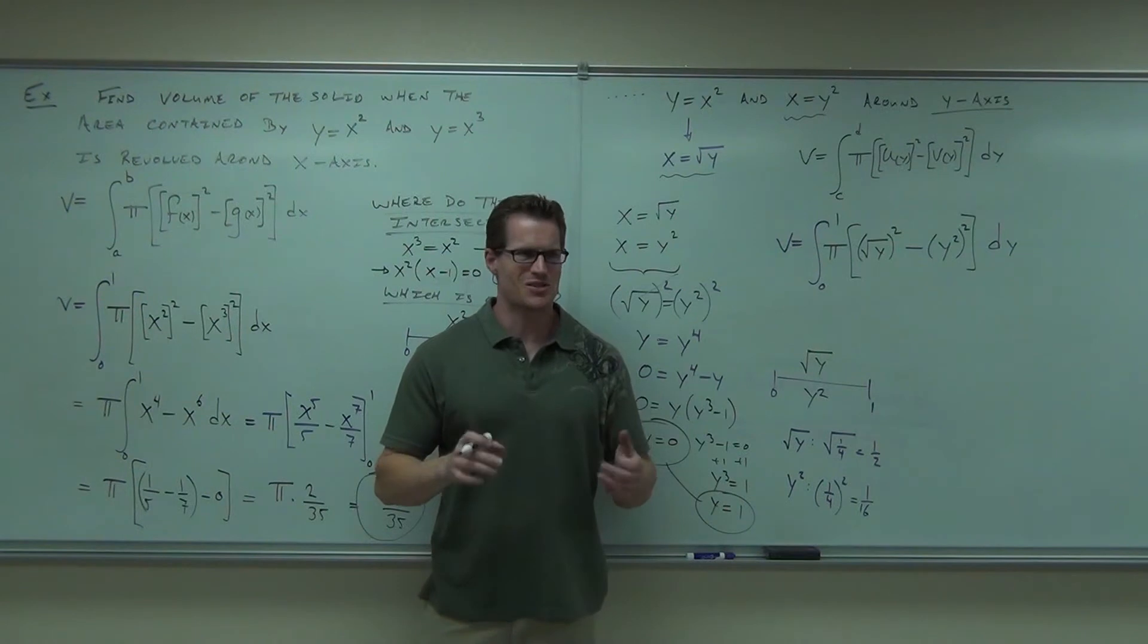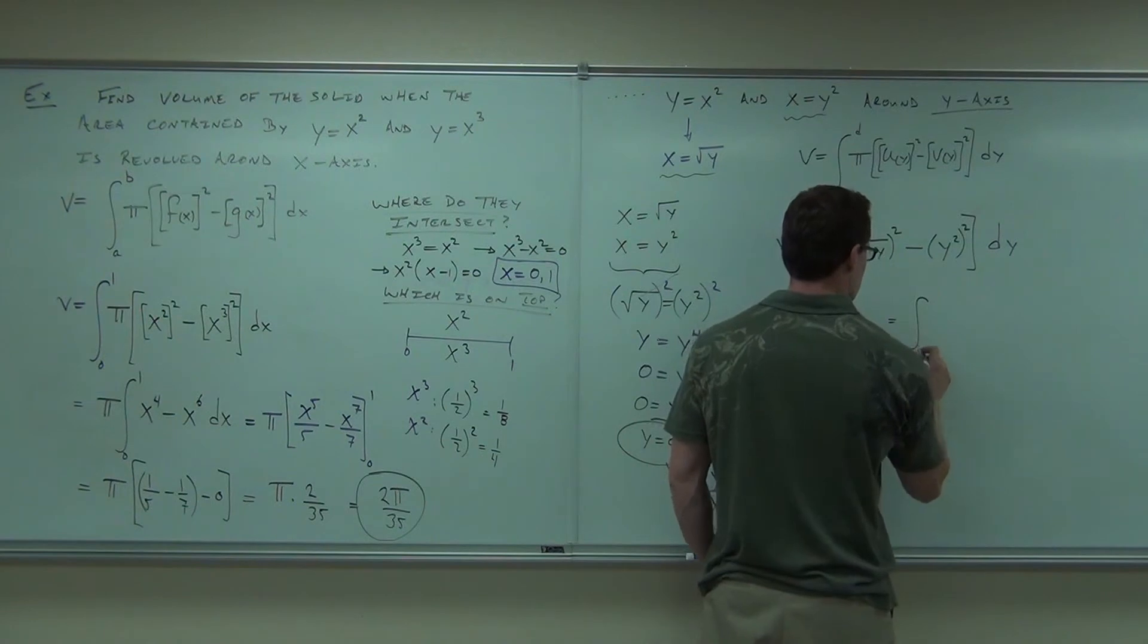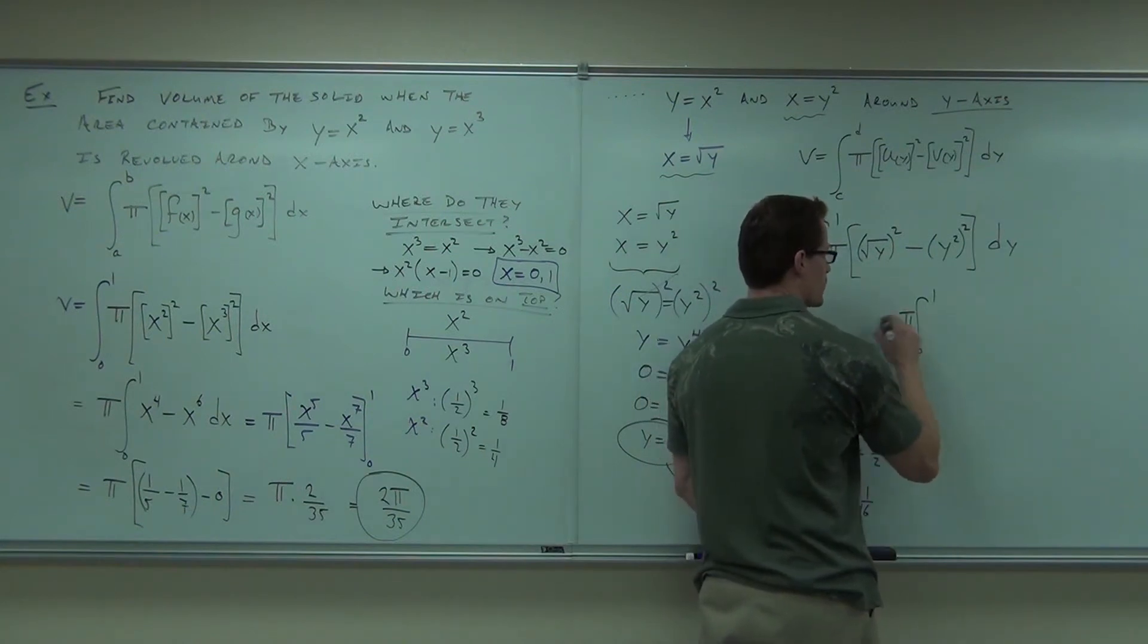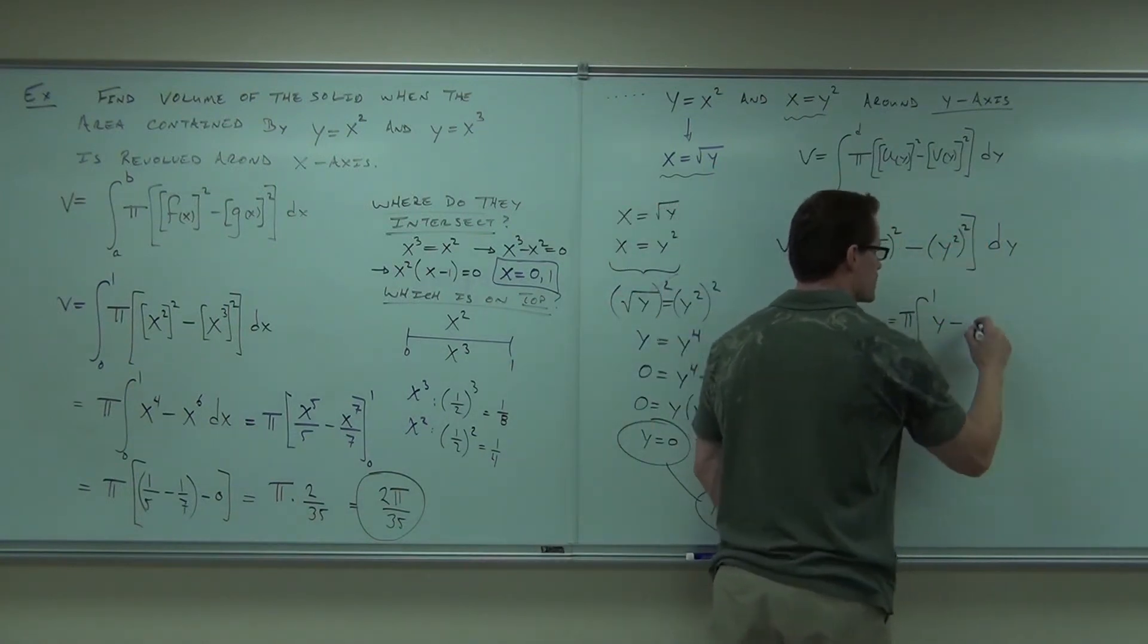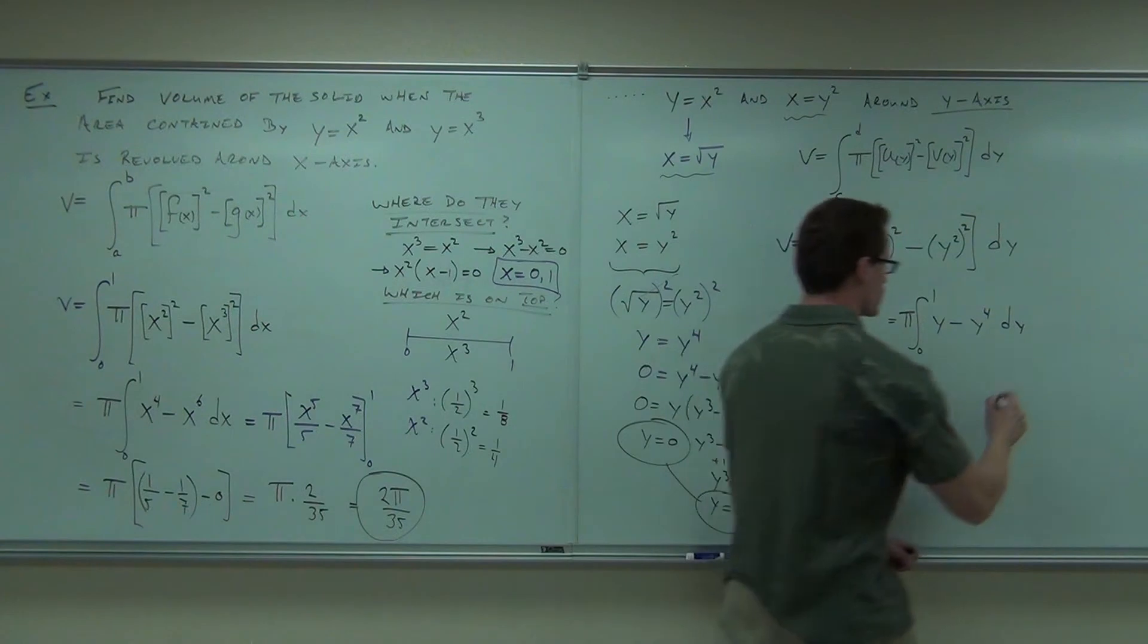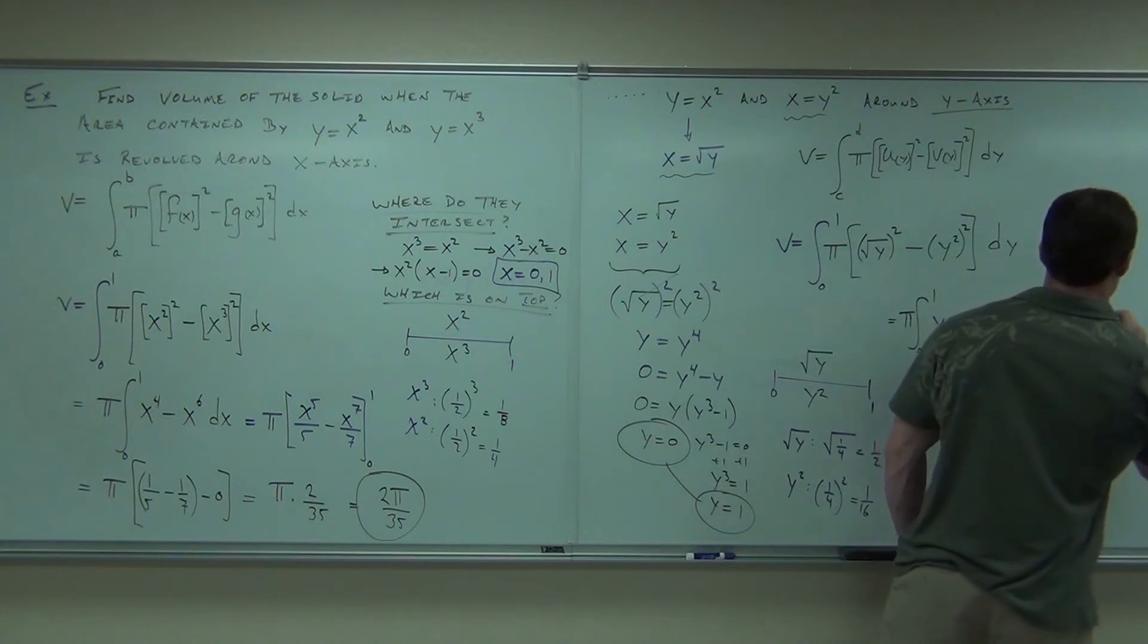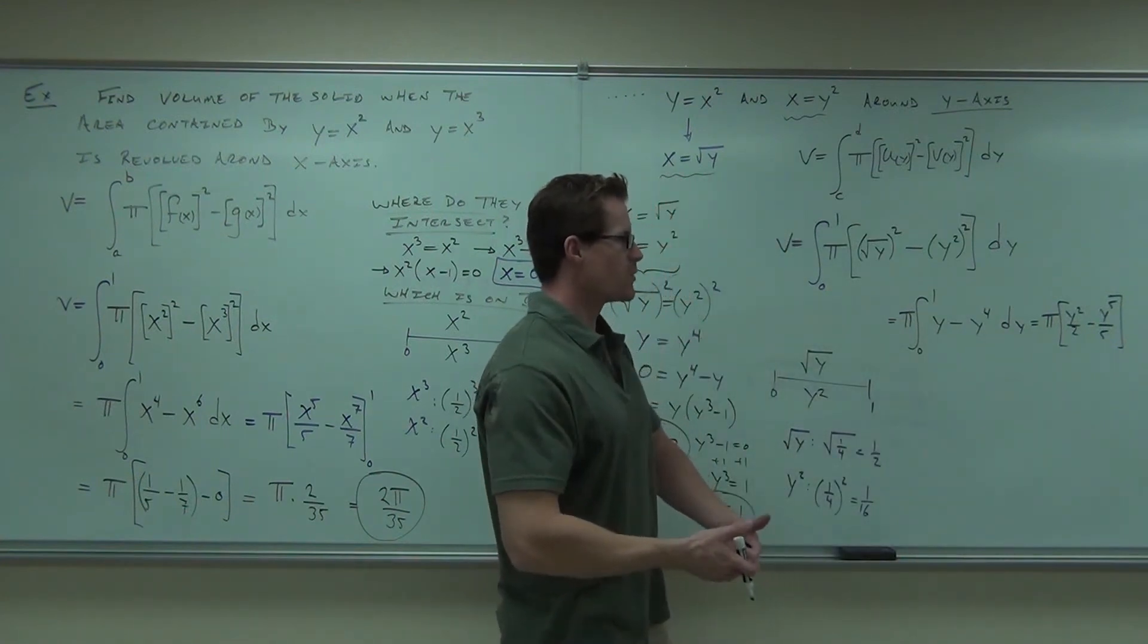Notice, really, the setup and the plugging in numbers is the hard part here. The integrals, most of them are going to be very doable for you because otherwise, we get stuck. You know, maybe I'll pull that pi out of here. We've got a constant anyway. We may as well pull that out. Square root of y squared. That's kind of nice. I just get y. Minus, this is going to give you y to the fourth dy. Not such a bad integral to do after all. We get a pi. We're going to get y squared over two minus y to the fifth over five.